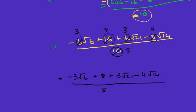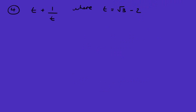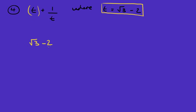That's certainly a long question. I'm probably going to just do one last question — question number four. Now this might look a lot different and really difficult, but actually there's only one step that's sort of different. This is a substitution question. They're giving you the value of T, which obviously has a surd in it, and all we need to do is substitute root three minus two where the T is. So I'm going to put it in for the first T: I'm going to get root three minus two, plus one over root three minus two.